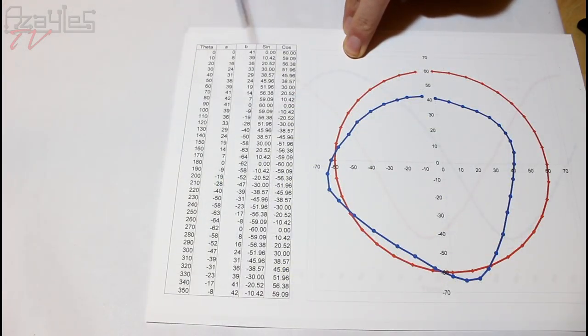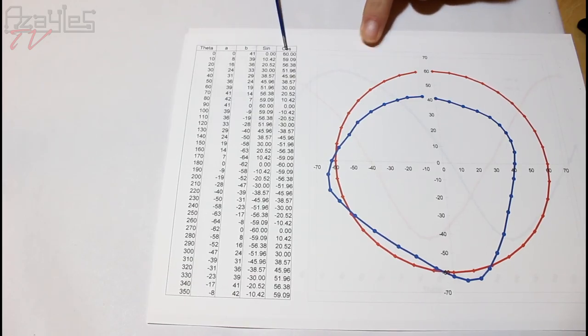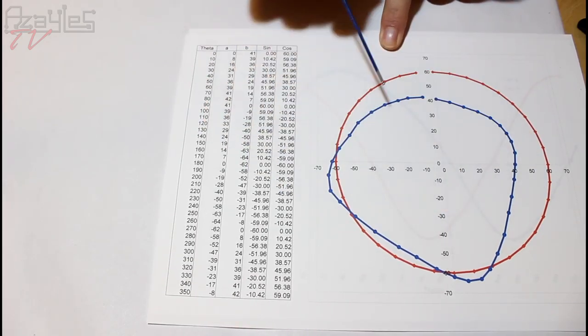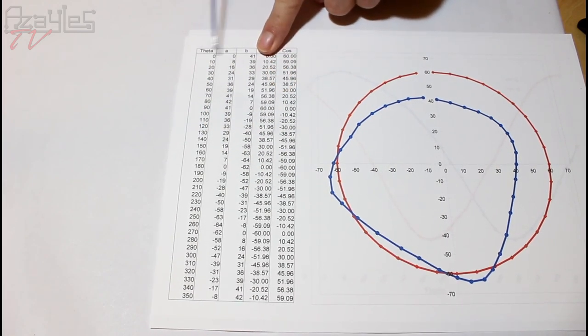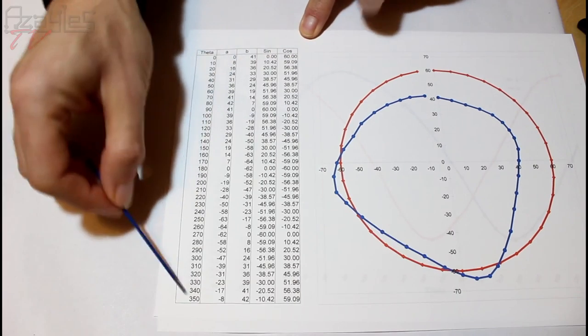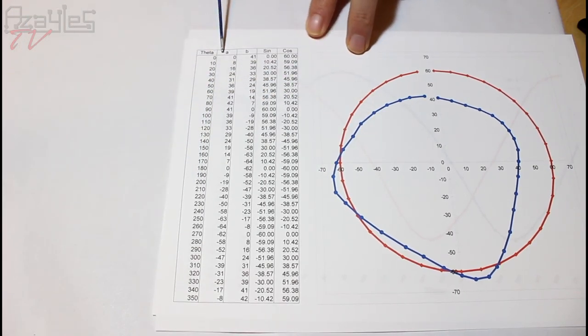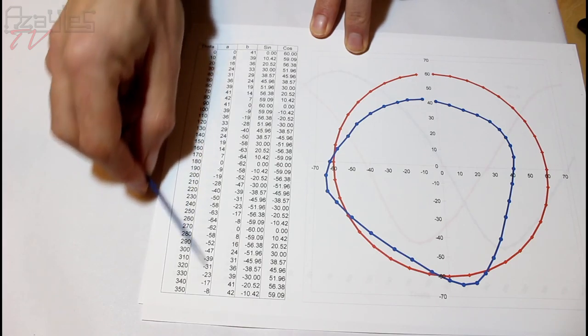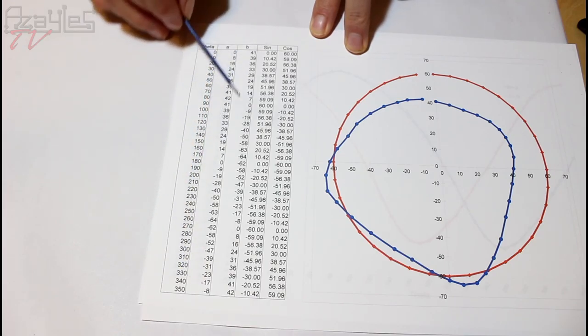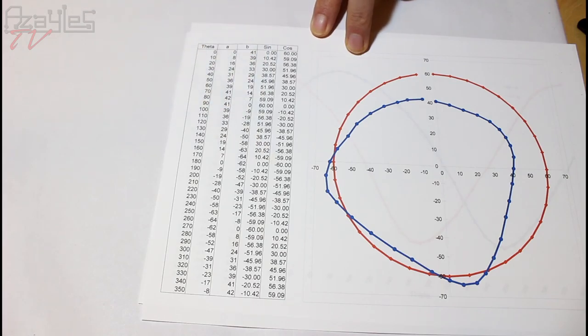So ultimately we have all of these figures. These two we can ignore - the sine and the cosine for the circle. These three are the ones we want. Theta is the angle that the crank arm needs to go around, A is the angles required for one servo arm, and B is the angles required for the second servo arm.